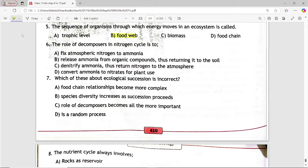Next is, the role of decomposers in nitrogen cycle is to. Options are fix atmospheric nitrogen to ammonia, release ammonia from organic compounds thus returning it to the soil, denitrify ammonia thus return nitrogen to atmosphere, convert ammonia to nitrate for plant use. Answer is option b, release ammonia from organic compounds thus returning it to the soil.